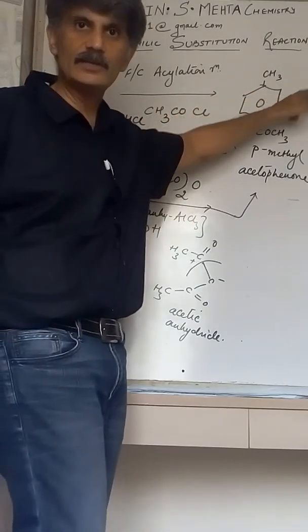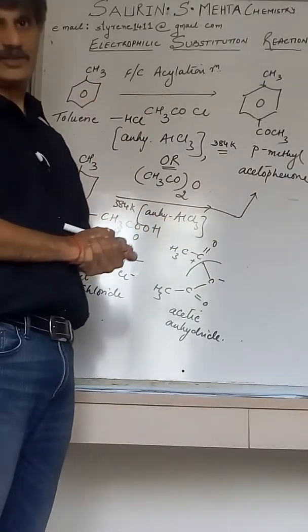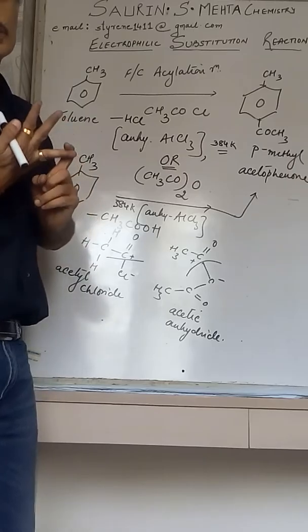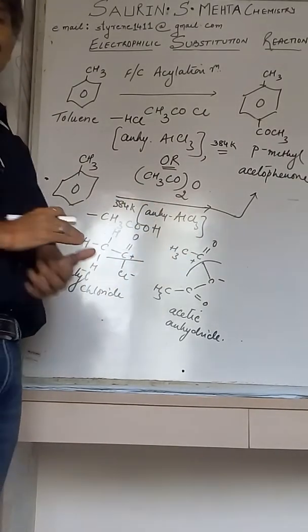Mind you, you don't get an ortho derivative, you will get only the para derivative. So this is all the 10 reactions: 5 pertaining to benzene and 5 pertaining to toluene we have studied over here.